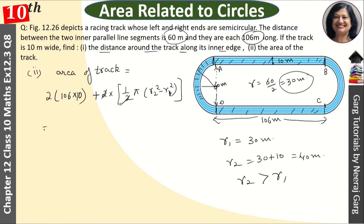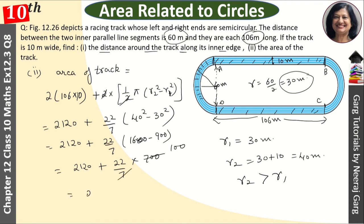Now, this 2 cancels from 2. And we have 2120 plus π value 22 upon 7, and this is our 40² minus 30². 2120 plus 22 upon 7 multiply, we will put 1600 minus 900. 2120 plus 22 upon 7 into 700. This 7 cancels.